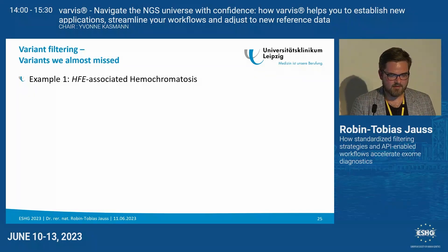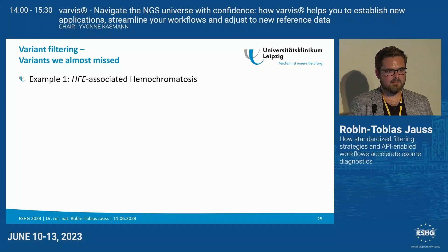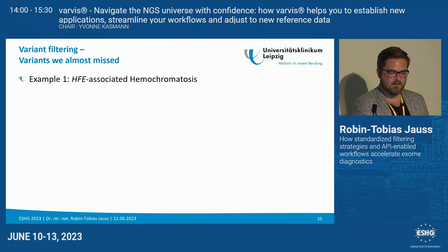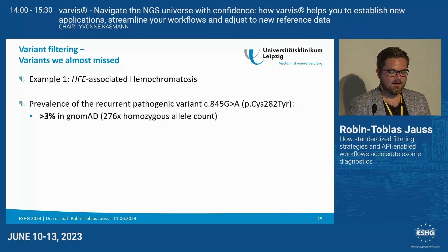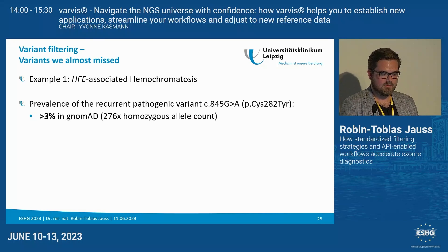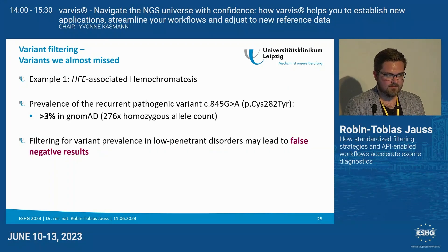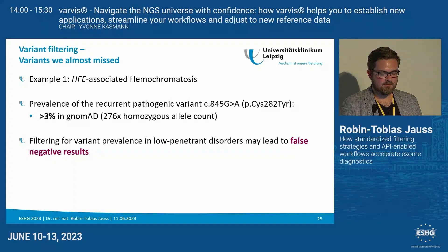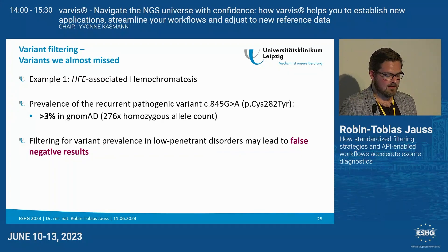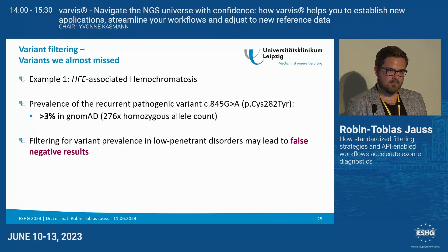I have examples from our institute where we almost missed a variant through overly harsh filtering. For example, we had a case with HFE-associated hemochromatosis. In this disorder, we have a very recurrent pathogenic variant with a very high prevalence in gnomAD — more than 3%, described as homozygous nearly 300 times. It is important to note that filtering exclusively for variant prevalence in disorders with very low penetrance like hemochromatosis, or disorders which may present at a subclinical level, may lead to false negative results.